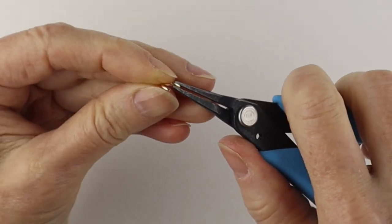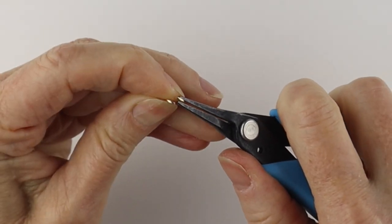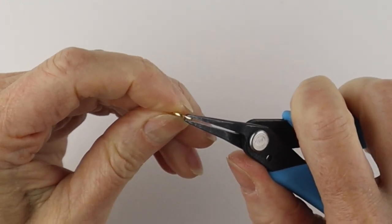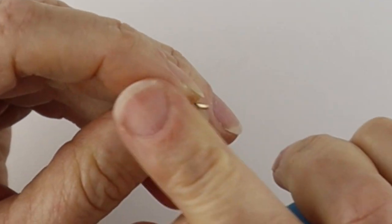And then to close the ring you're just going to take your flat pliers. If the wire is stiff, take another pair of flat pliers and just close it up so it's completely closed and smooth.